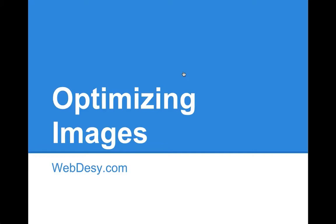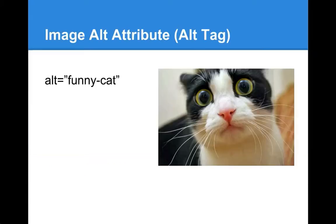Google does not really know what is depicted on your images unless you somehow prompt it. The first way to give Google an idea of what is on your image is to use a descriptive alt attribute.